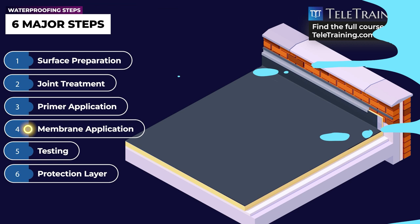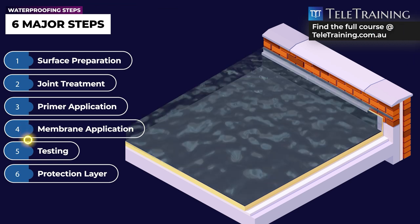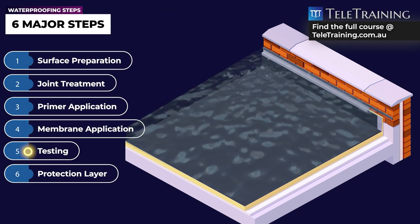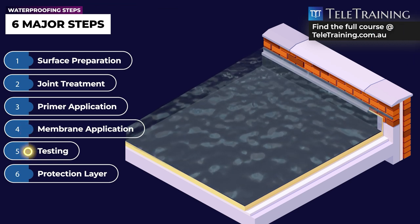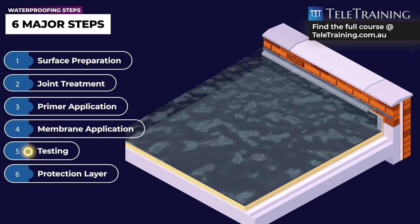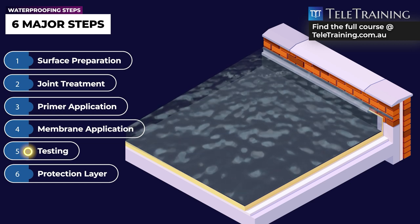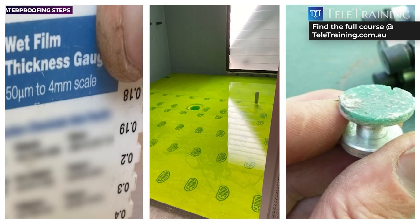The next step is to verify the membrane's correct thickness, adhesion, and integrity by testing. There are various testing methods which could be carried out during the waterproofing membrane application or post application of the membrane.